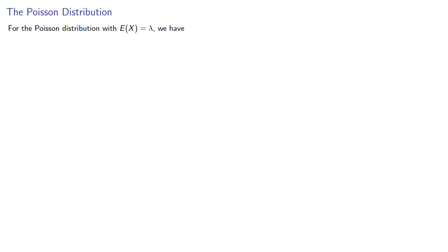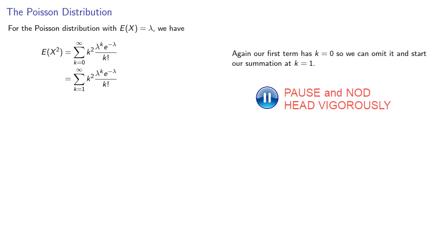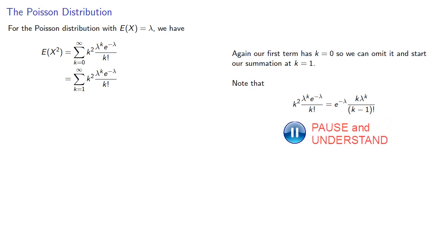How about the variance? We can find the expected value of X squared. Again, our first term has k equals 0, so we can omit it and start our summation at k equal to 1. We can simplify our sum k squared lambda to the k e to the minus lambda divided by k factorial. We can remove the constant factor of e to the negative lambda, and so that gives us a sum.